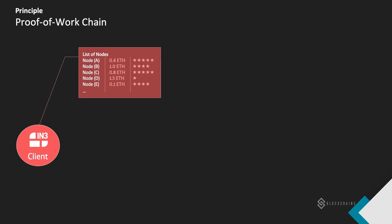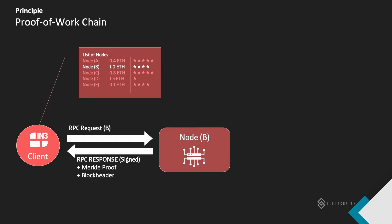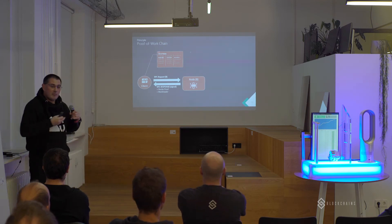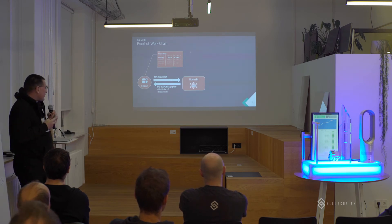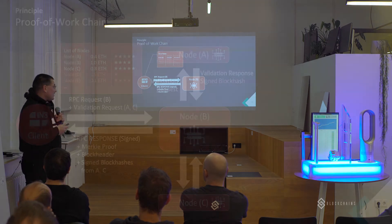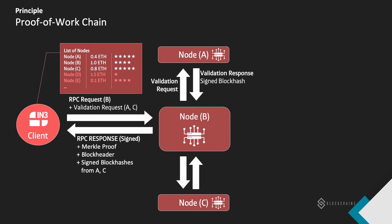The client selects one of these nodes — in this case, node B — and sends an RPC request. As a response, it receives the result it asked for, but also the Merkle proof for the block where the information is in, and also the block header. With this information, the client itself can check that this information comes from this block by calculating it with the Merkle proof. At this point, the client has no ability to check if this is the real block — node B could send a false block. That's why the client also selects other nodes from the node list and asks them for validation, meaning it asks them to sign the block hash of the block where the information comes from. When the client has confirmation that this is the block and others have witnessed that it's a true block, then it can rely on it.